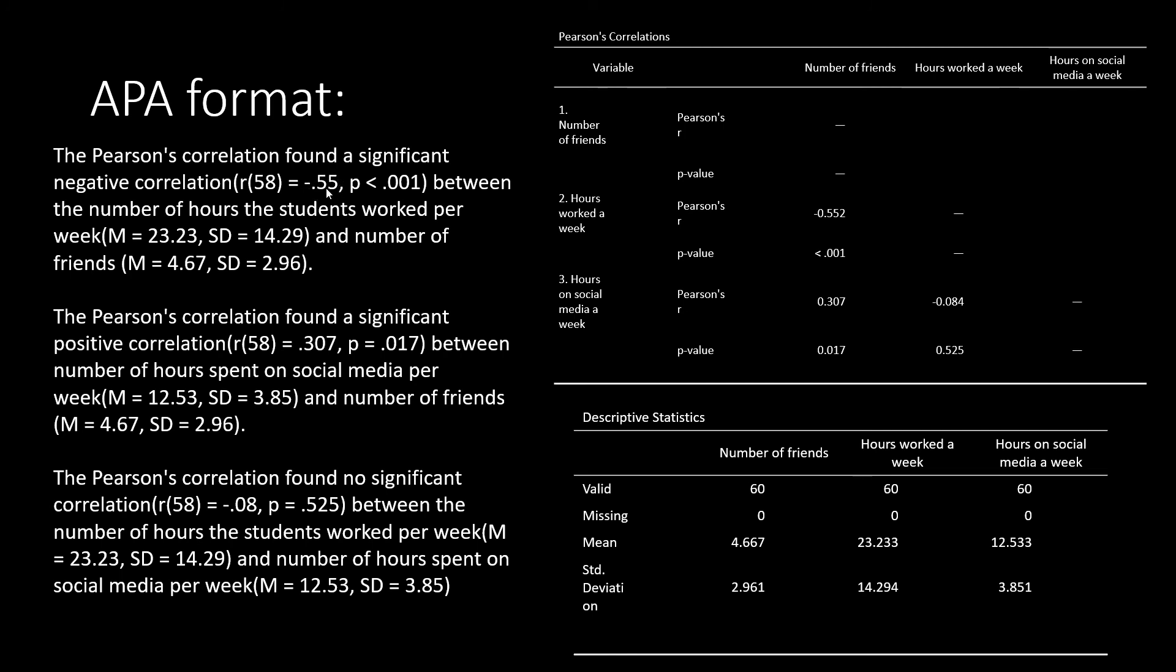We then list our Pearson's correlation coefficient itself. In this case, it was negative 0.55, and we're going to round this to the second decimal. We'll then report our p-value at the end. The next thing that's going to be important to report is the variables that are involved in this particular correlation. We're going to report the means and standard deviations of those two variables, as well as exactly what those variables are.